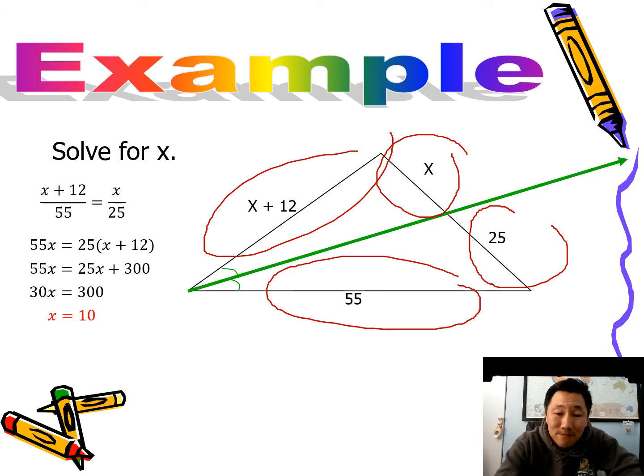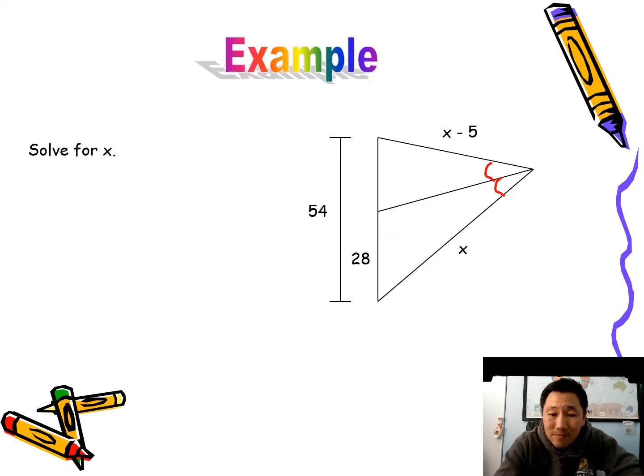Very nice. Let's try another one. Here's another one: solve for X. So here you can see that this means that this is a bisector. If the two angles are equal, that means that that is a bisector.